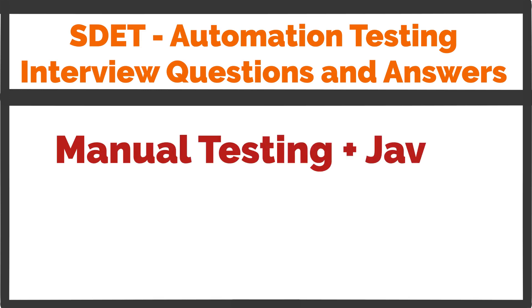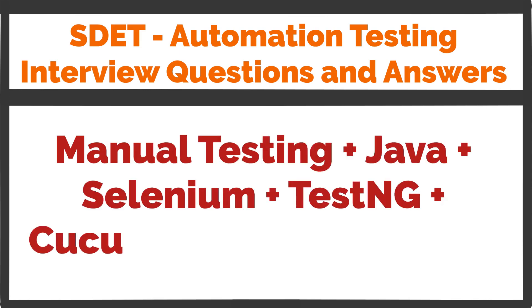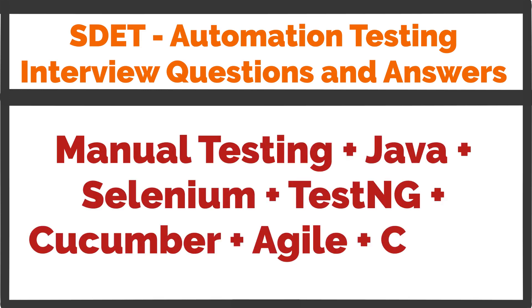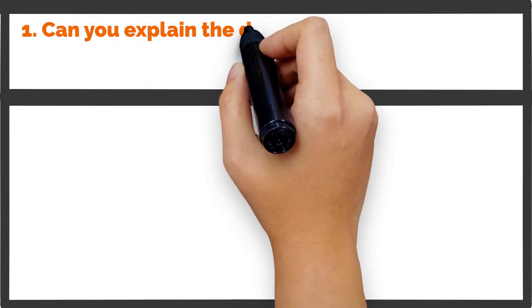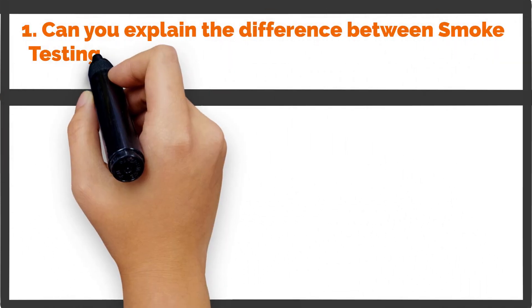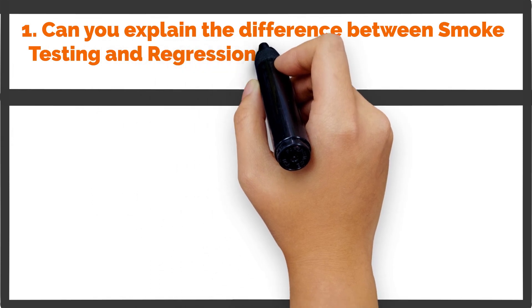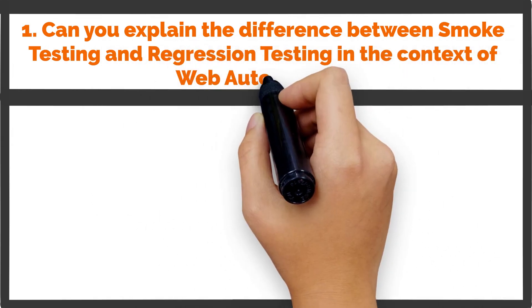Automation Testing Interview Questions and Answers for Freshers and Experienced Candidates. Question 1: Can you explain the difference between smoke testing and regression testing in the context of web automation?